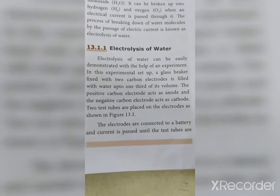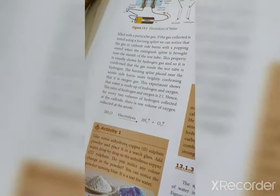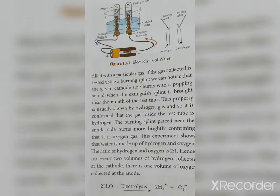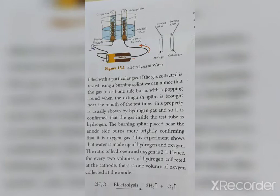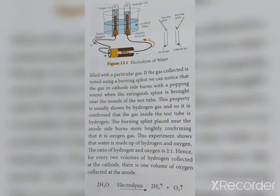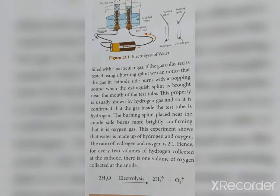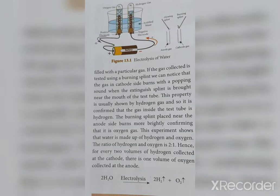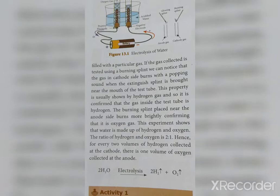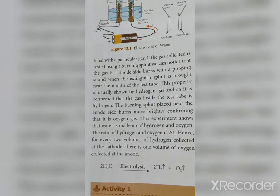Two test tubes are placed on the electrodes as shown in the given figure. The electrodes are connected to a battery and current is passed until the test tubes are filled with a particular gas. If the gas collected is tested using a burning splint, you can notice that the gas on the cathode's side burns with a popping sound when an extinguished splint is brought near the mouth of the test tube.